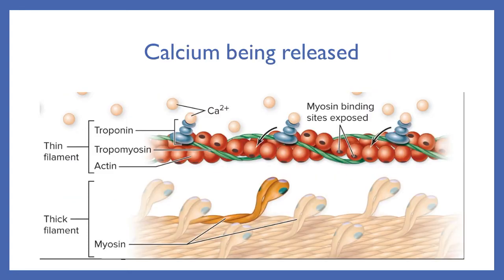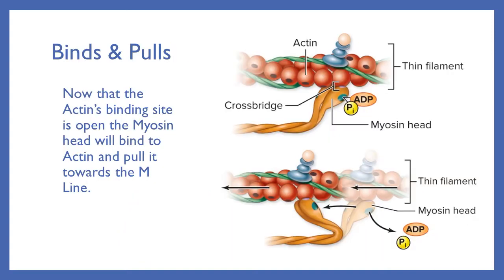Here is a picture of your myofilaments. We see the thin filament actin on top with its troponin and tropomyosin regulatory proteins, and the thick filament myosin on the bottom with all of its heads that want to bind to the actin. When calcium is released, it comes and binds to the troponin, which then releases the binding sites for the actin. The myosin heads bind to the actin and form a crossbridge, then exert a pull that pulls the actin towards the M-line.